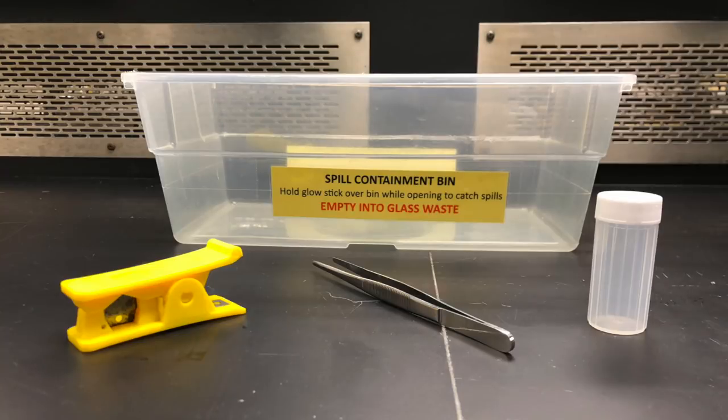For this next part, you will need a glow stick, tubing cutters, forceps, a spill containment bin, and a 20 milliliter plastic vial.